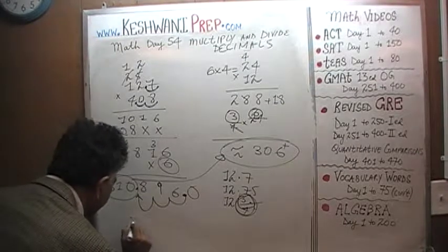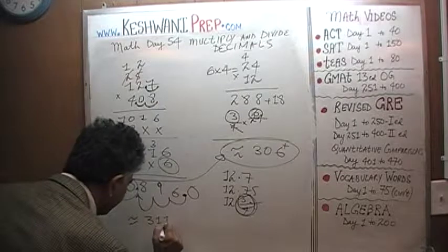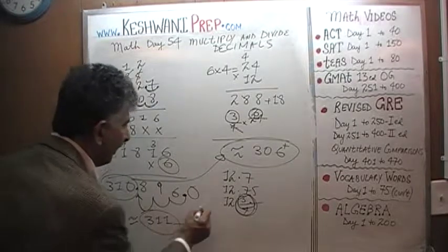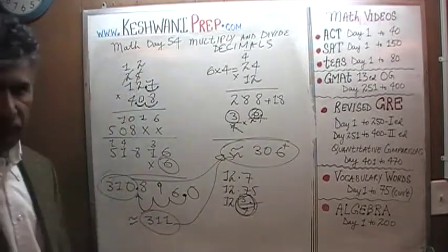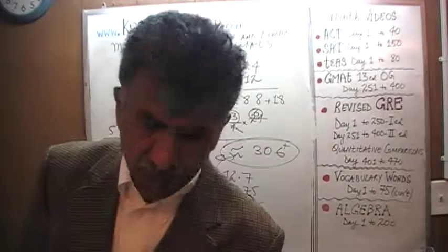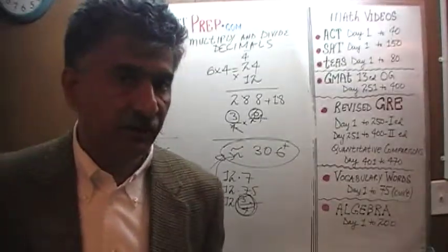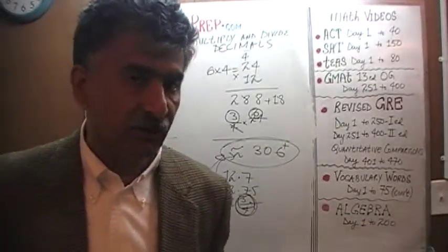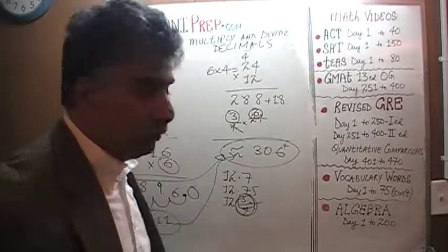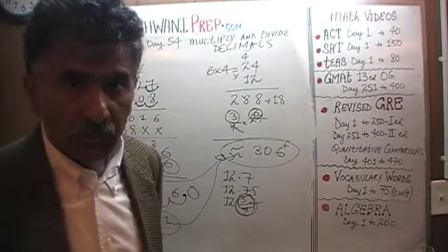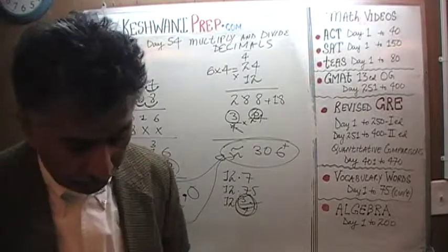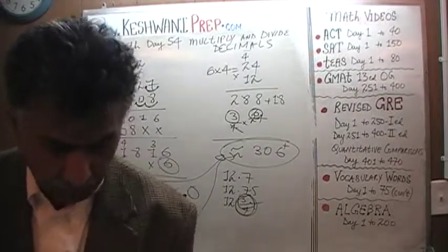It's actually around 311. So we were off by about 5. We said the answer would be something more than 306, and it turned out to be 310.896 — approximately 311. So if you find one answer choice slightly more than 306 and one slightly less, you have to know which way to go. You have to know whether you are underestimating or overestimating. Do you understand?